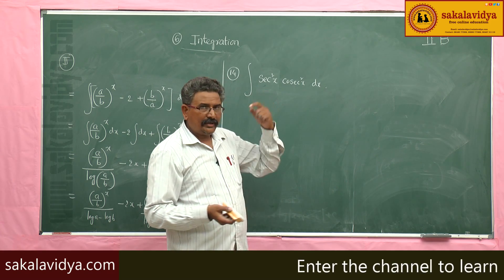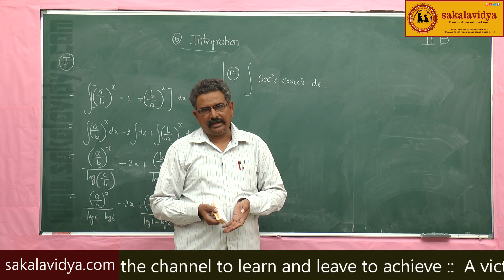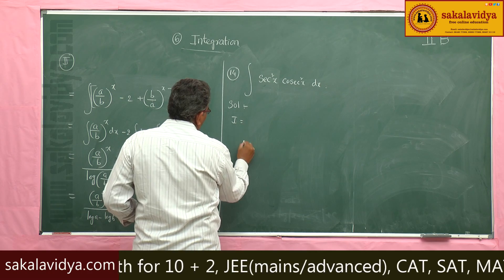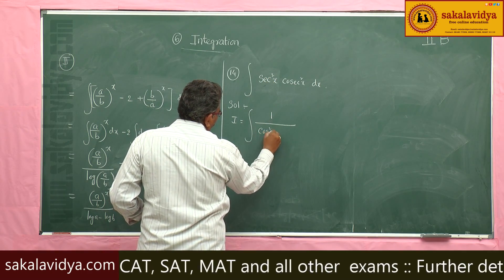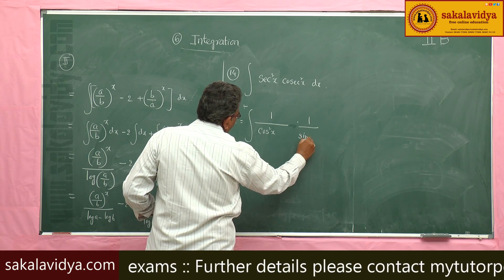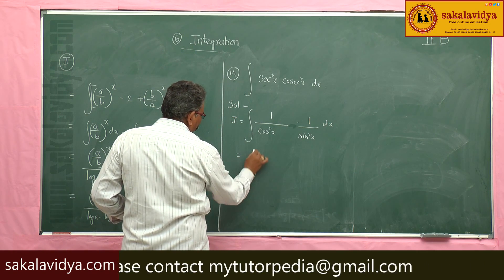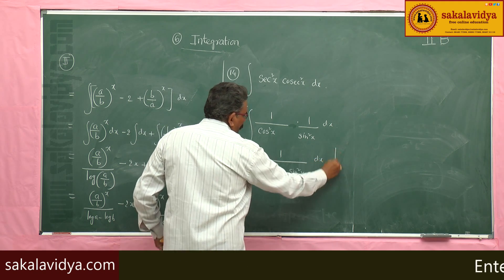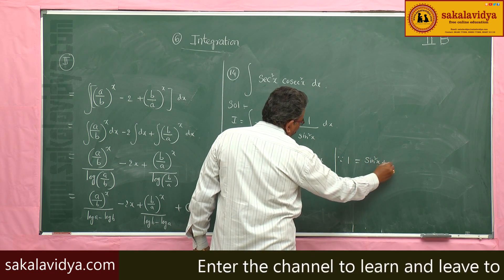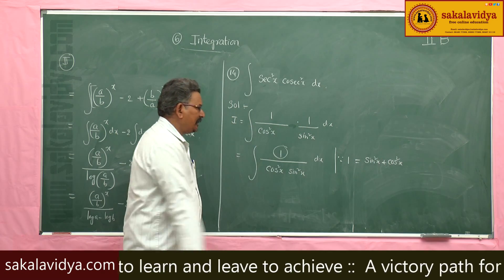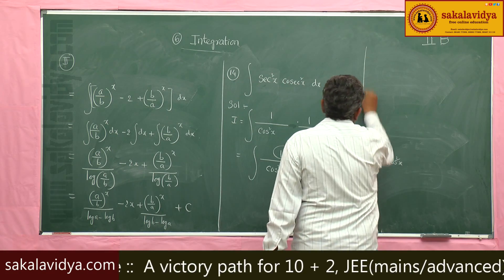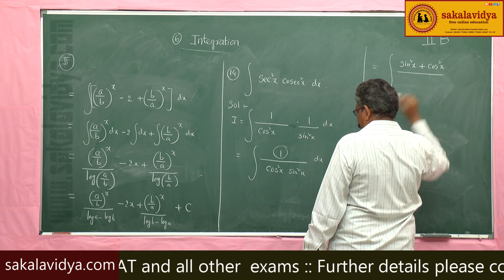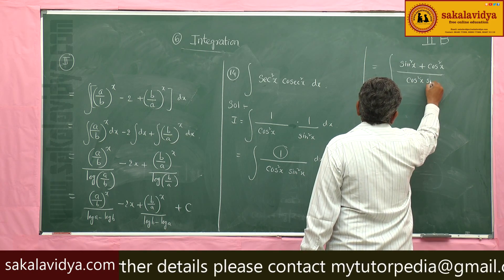Let us try: I is equal to the integral of 1/cos²x · 1/sin²x dx, which is 1/(cos²x · sin²x) dx. Now we use the identity sin²x + cos²x = 1, replacing the 1 in the numerator. So I equals the integral of (sin²x + cos²x) / (cos²x · sin²x) dx.